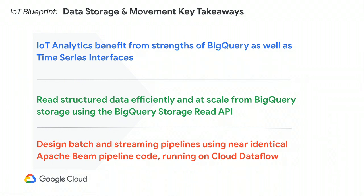To recap: IoT analytics truly benefit from having an API to the data both for SQL via BigQuery, and a time series interface via OpenTSDB. Reading data at scale from a structured source is much better now with the BigQuery Storage Read API. And Apache Beam with Cloud Dataflow enables both historical and streaming pipelines to be performed with near-identical code. Scale up on your Dataflow skills if you haven't. With that, I'll pass the presentation over to my colleague Ryan, who worked on the ML part.